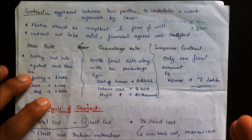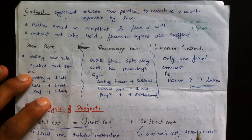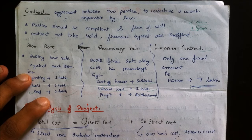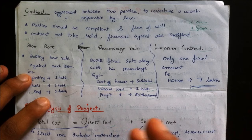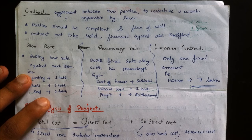After the tender comes the contract. A contract is an agreement between two parties to undertake work that is enforceable by law. Both parties have mutual understanding that they will do the specified work, and once enforceable by law, it becomes effective.